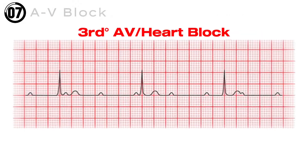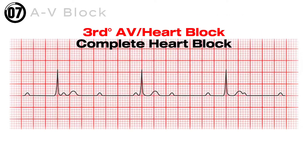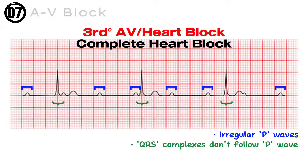The third-degree heart block is also called a complete heart block. In complete heart block, the P wave is not regular, and the QRS complex does not follow the P wave — there is no relation between P wave and QRS complex, and sometimes they appear at the same time, forming a junctional rhythm. Complete heart block usually has a heart rate below 40 beats per minute.